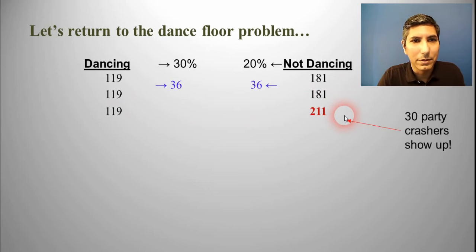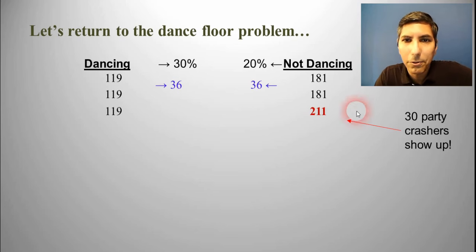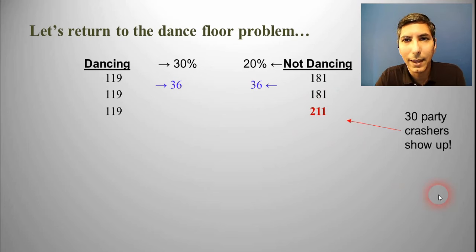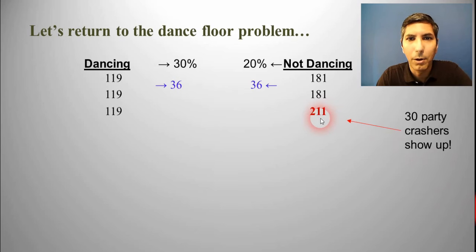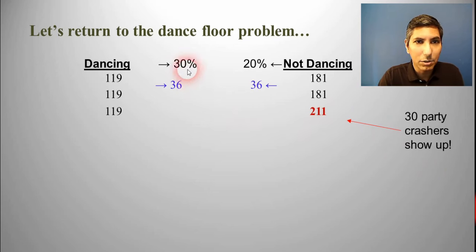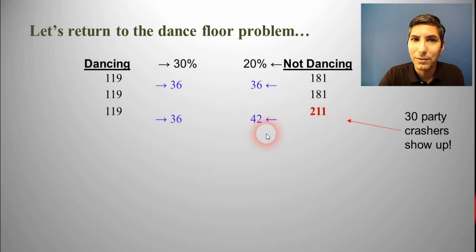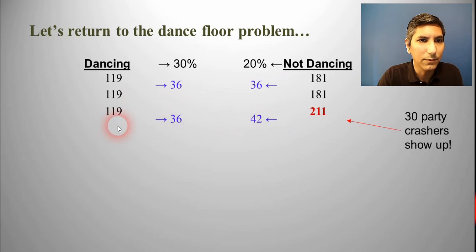What happens if we throw some party crashers into the mix? We're going to disturb the dance floor equilibrium by throwing 30 party crashers. When party crashers show up, they usually show up on the not dancing side — people as they walk into the gymnasium are not dancing their way into the building. So we're going to put the 30 party crashers on the not dancing side. This changes things, because 30% of 119 is still 36, but 20% of 211 is actually 42. So we have a net change of positive 6 in the direction of the dance floor.